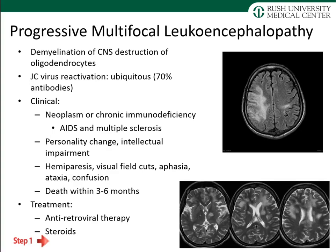The second CNS demyelination syndrome is progressive multifocal leukoencephalopathy. In this disorder, demyelination occurs because of destruction of the oligodendrocytes via viral infection. The JC virus — named after the first patient identified — is ubiquitous; about 70% of the general population has antibodies to it. In chronically immunodeficient patients, this virus can reactivate and produce clinical disease.